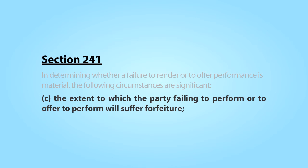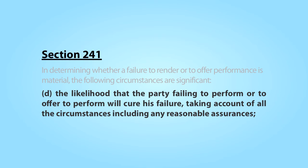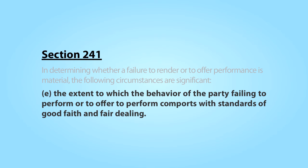Subpart C balances the loss to the non-breaching party resulting from the failure compared to the forfeiture the breaching party will suffer if the non-breaching party is allowed to walk away from the contract. Subpart D says that a breach is less likely to be deemed material if, under the circumstances, it appears that the other party is likely to cure the failure. Finally, Subpart E takes account of whether the actions and assurances of the breaching party comport with standards of good faith and fair dealing. This provision is directly applicable to the Sackett v. Spindler case in our textbook, where the breaching party kept giving empty assurances that he intended to cure his failure to close on the deal to purchase the newspaper.